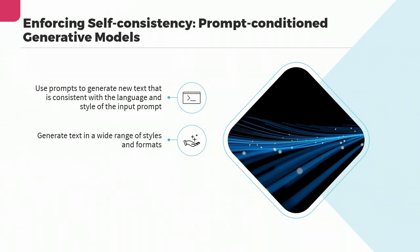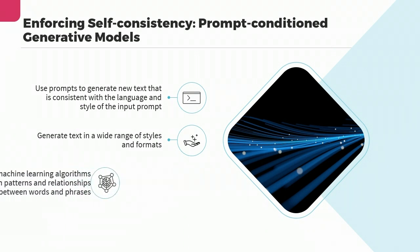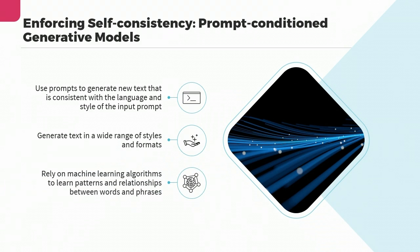To achieve this level of flexibility, prompt-conditioned generative models often rely on complex machine learning algorithms such as transformer models and neural networks to learn patterns and relationships between words and phrases. These algorithms use large datasets of text to learn, which they can then use to generate new text consistent with the input prompt. Overall, prompt-conditioned generative models represent an exciting new development in natural language processing.